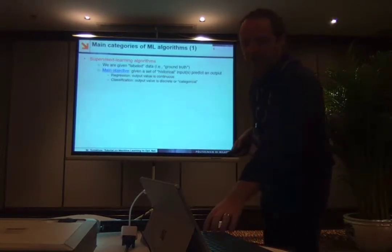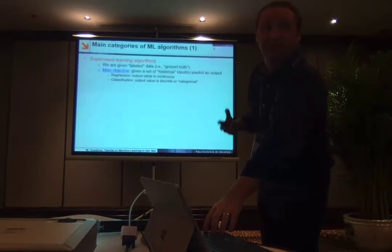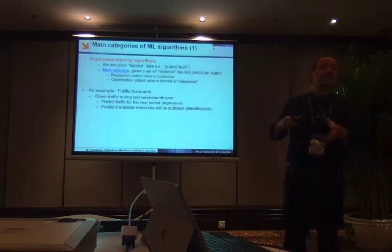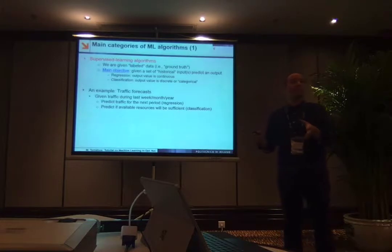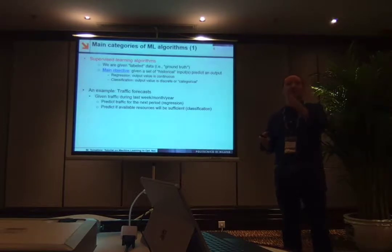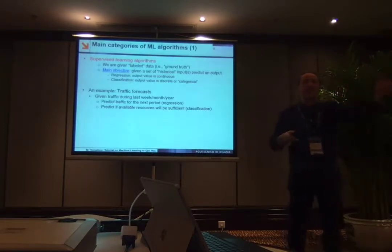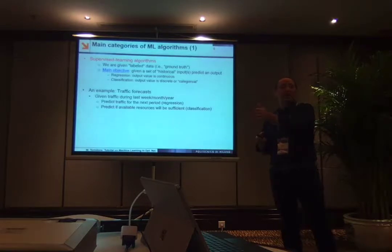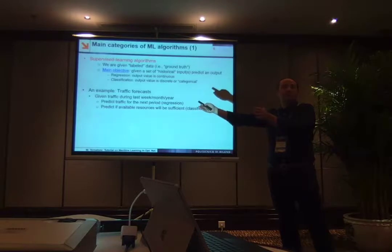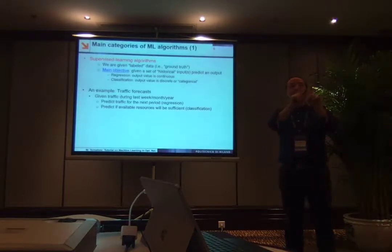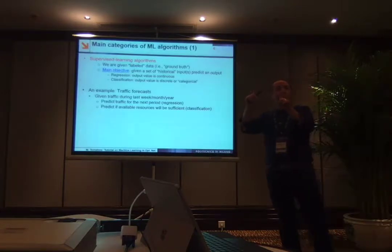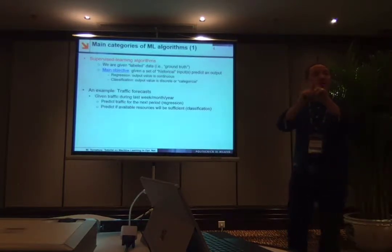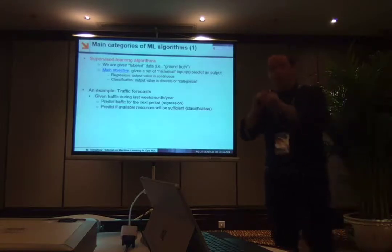A typical example of supervised learning is traffic forecasting. You have cells in an urban environment, and you know that at a specific time, in a specific cell, over several past weeks, you always had a certain amount of traffic. You predict for the future that you will have roughly that amount of traffic. You connect two inputs — the location of the cell and the time of day — to one output: how much traffic you will have. That's supervised learning.